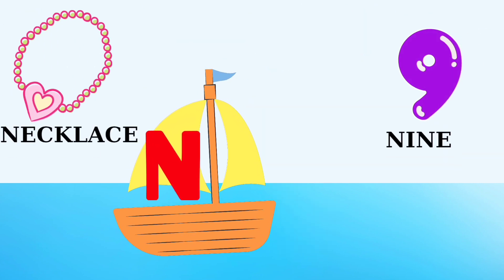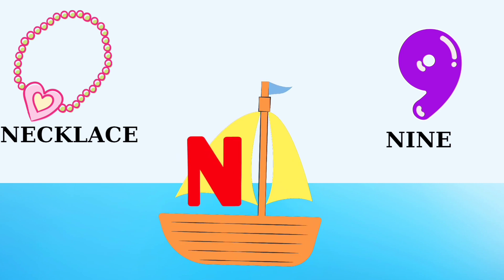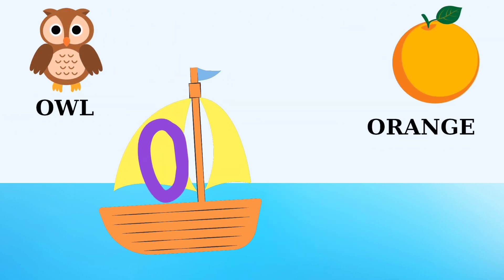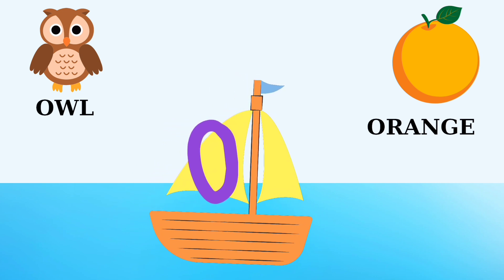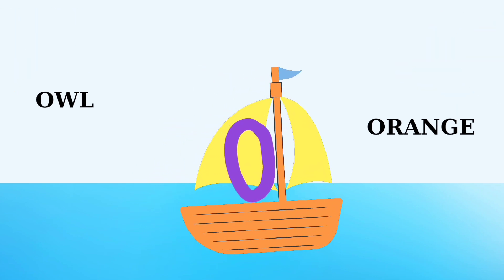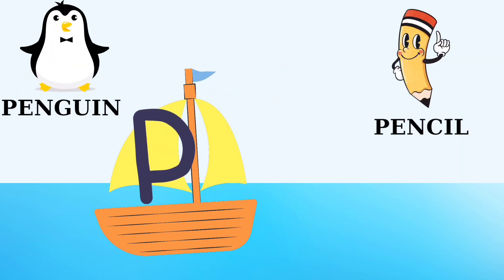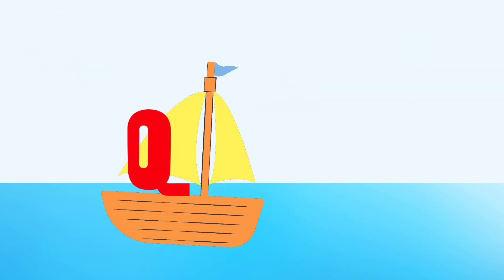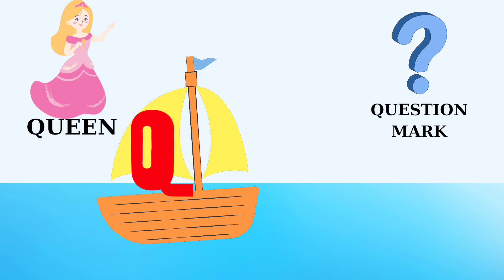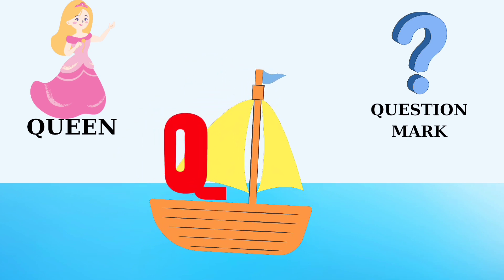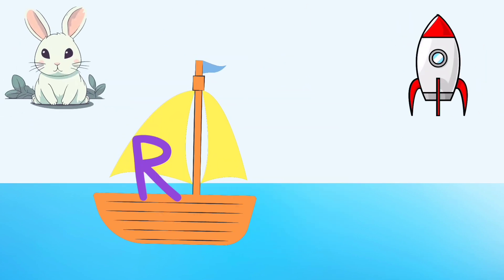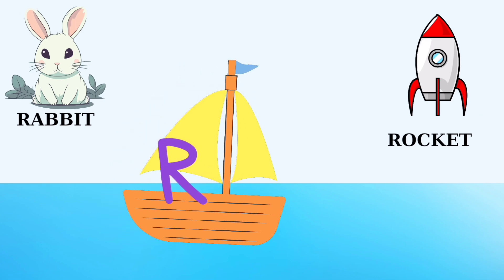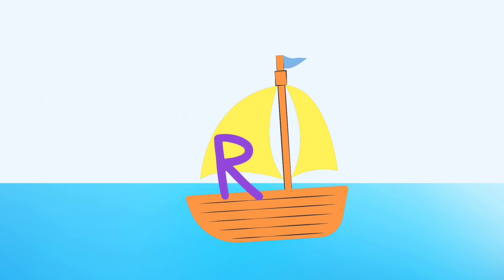N is for necklace, N is for nine. O is for owl, O is for orange. P is for penguin, P is for pencil. Q is for queen, Q is for question mark. R is for rabbit, R is for rocket.